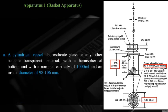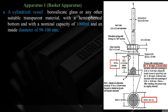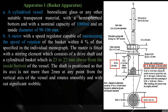Apparatus 1 — Basket Apparatus (USP): consists of a cylindrical vessel made of borosilicate glass or suitable transparent material with a semi-spherical bottom, capacity of 1000 mL, and internal diameter of 98 to 106 mm. A motor with a speed regulator maintains the rotation speed of the basket within 4% of the specified value. The motor is fitted with a drive shaft and a cylindrical basket positioned 23 to 27 mm above the inside bottom of the vessel.